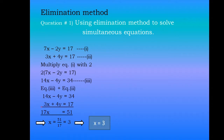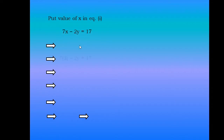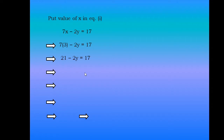Now we'll find the value of y. For this we can put the value x equals 3 into equation 1, 2, or 3. I have chosen equation 1. So we'll put the value of x into this equation to get the value of y. 7 multiplied by 3 is 21. Now we'll move the constant value to the constant side.